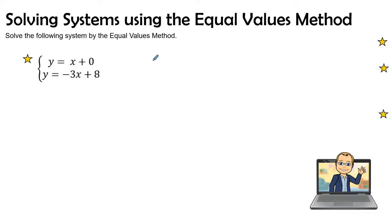The reason why I can set them equal to each other is because if y is equal to y, then I know I can set this right side of the equation equal to each other. So x plus 0 can be set equal to negative 3x plus 8.